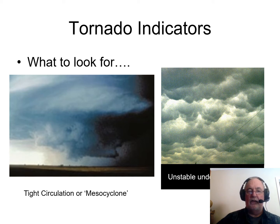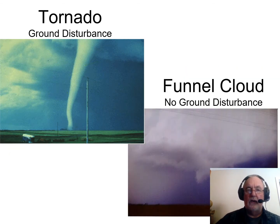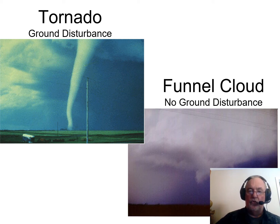So we have a cumulonimbus cloud, tight circulation, and a funnel cloud developing. When that tight circulation — the mesocyclone — starts to develop, we often see the underbelly of the cloud bubbling with instability. This is a supercell cumulonimbus cloud. A tornado is a funnel-shaped rotating mass of air with ground disturbance. A funnel cloud has not yet had that ground disturbance. All tornadoes grow from funnel clouds, but not all funnel clouds become tornadoes — some die off before reaching the ground.